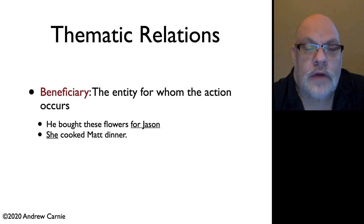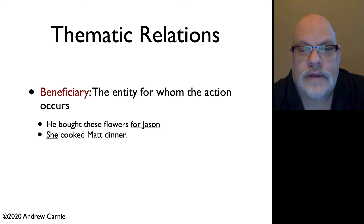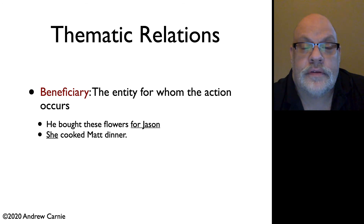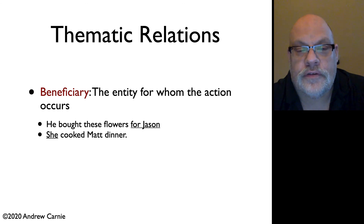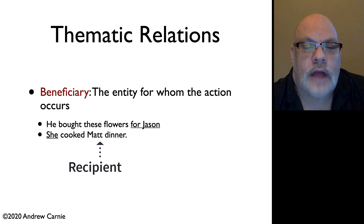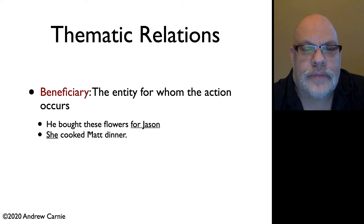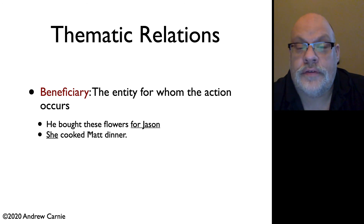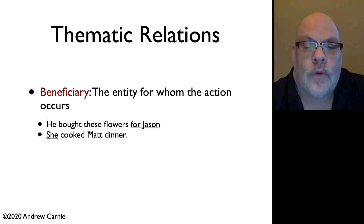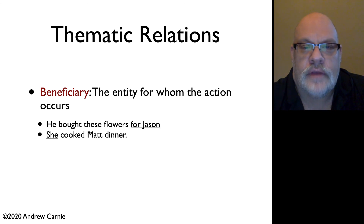And we have one more to talk about — the beneficiary. The beneficiary is the entity for whom the action occurs. Often in English these are marked with 'for,' but not necessarily. So 'he bought these flowers for Jason' — Jason is the beneficiary of the buying. 'She cooked Matt dinner' — Matt is the beneficiary in this sentence. You could also say 'he bought Jason flowers' — Jason would still be a beneficiary even where the 'for' preposition is not present.